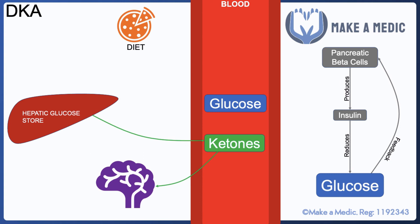DKA primarily happens in type 1 diabetics, where patients are unable to produce insulin from their pancreatic beta cells. If they can't produce enough insulin, there are two main consequences. First, there's nothing pushing glucose into the cells and hepatic glucose stores, so blood glucose concentration rises. Second, the inhibitory effect that insulin had on ketone generation within the liver is removed, and hence ketone concentration in the blood increases considerably.